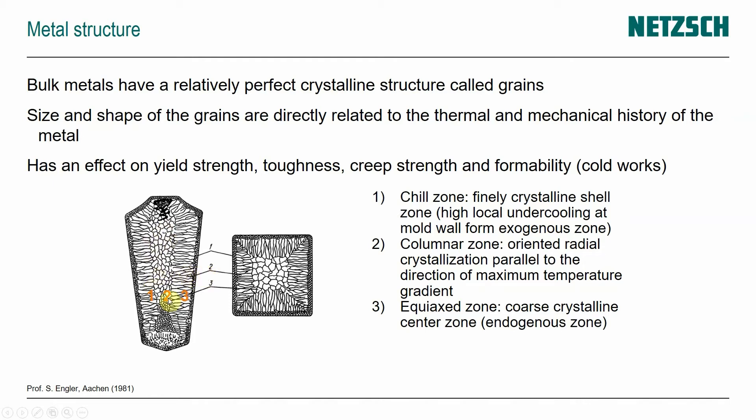Then in the very center — depending on how large the part is, that can be relatively small — we have an equiaxed zone with a more coarse crystalline center, also called an endogenous zone. That's the structure we have in a part as we're typically producing it.